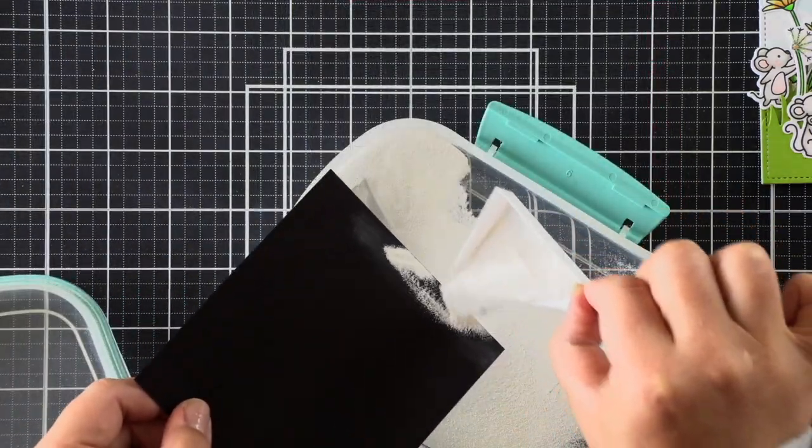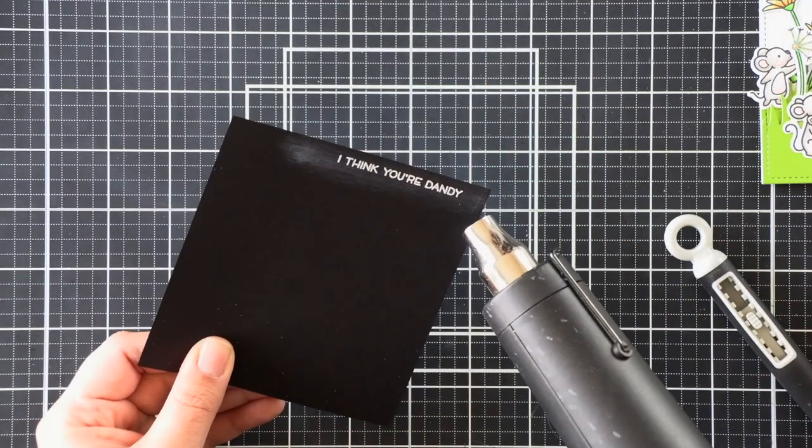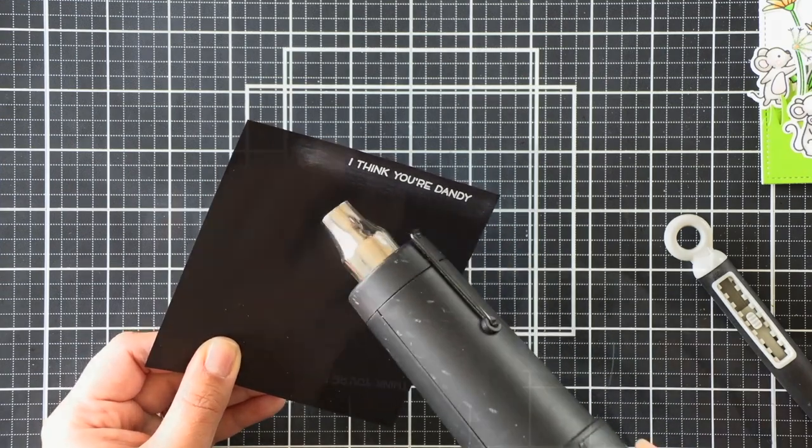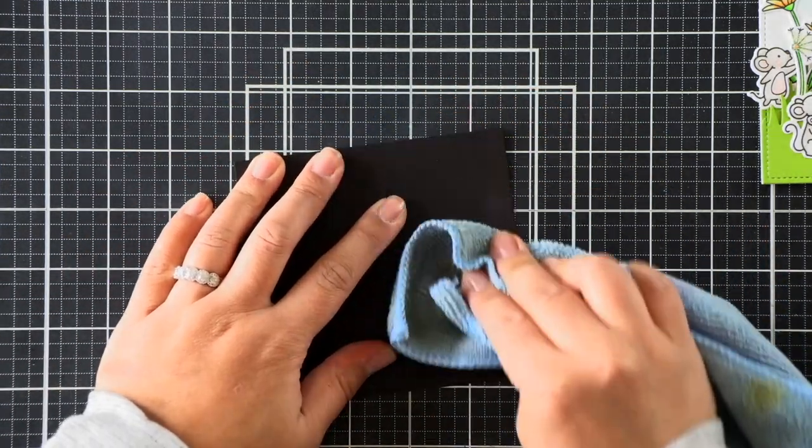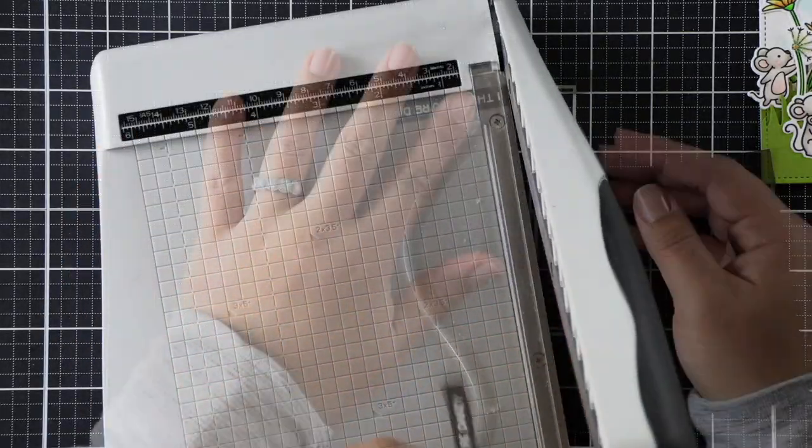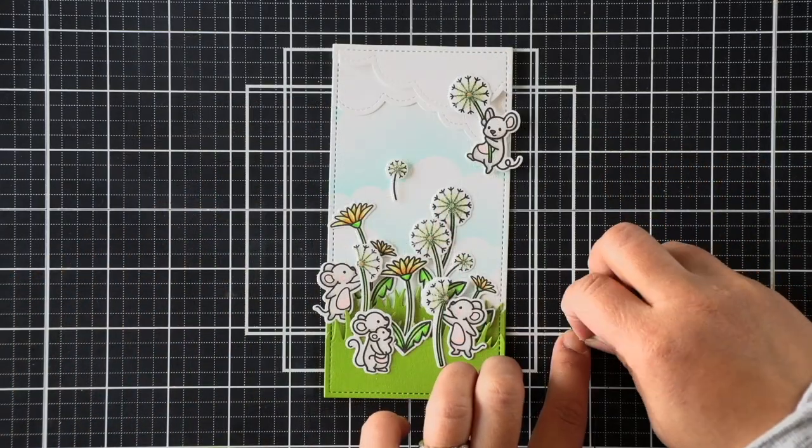And I'll sprinkle on my white embossing powder after stamping it with a clear Versamark ink. And now I'll heat set that. Because my anti-static powder tool leaves a white clay residue, I'm just going to wipe that away with my microfiber cloth, and that'll clean up my cardstock before I trim it down and get it ready to adhere over my card.